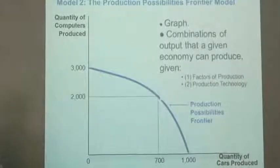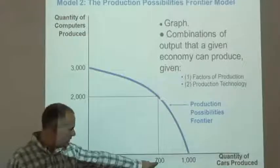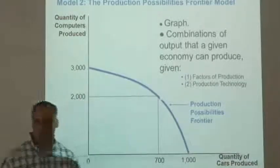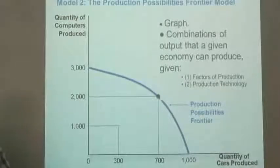This is the production possibilities frontier. It also tells us that if it wished, it could produce 700 cars and 2,000 computers. This is on the boundary. This is an attainable point.